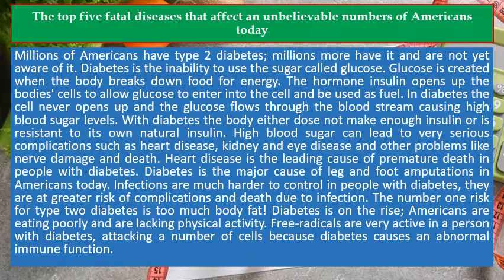With diabetes, the body either does not make enough insulin or is resistant to its own natural insulin. High blood sugar can lead to very serious complications such as heart disease, kidney and eye disease, and other problems like nerve damage and death. Heart disease is the leading cause of premature death in people with diabetes. Diabetes is also the major cause of leg and foot amputations in Americans today. Infections are much harder to control in people with diabetes, and they are at greater risk of complications and death due to infection.